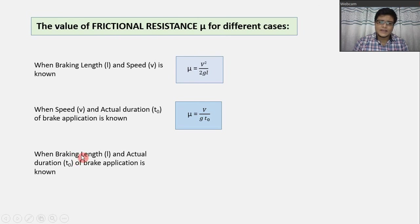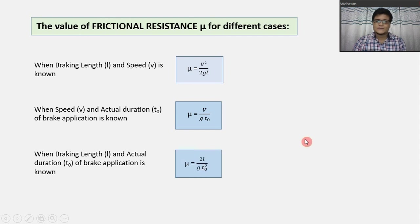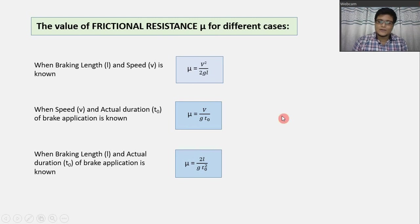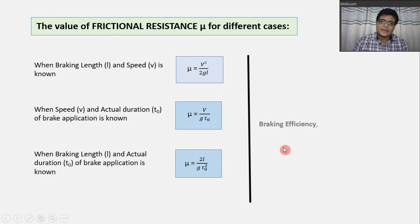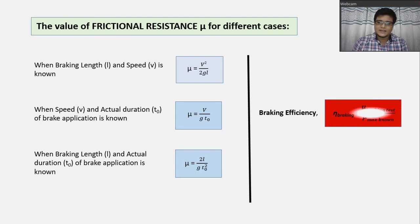If we have the braking length and actual duration of brake application, then also we can determine the mu value using the corresponding formula. After calculating the mu value using any of these three formulas, we will calculate the braking efficiency. The formula of braking efficiency is the mu value obtained from the test divided by the maximum known mu value.